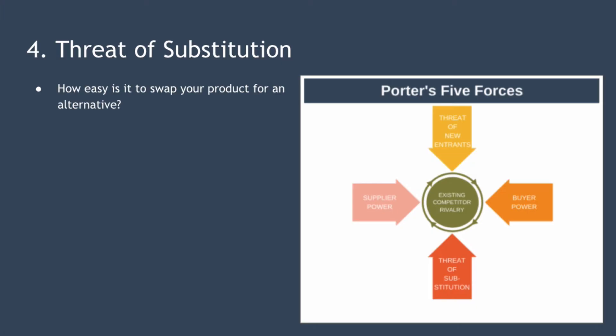The fourth force is the threat of substitution — how easy would it be to swap your product for an alternative? This threat isn't about replacing your product with an identical product, but about your customers finding another way to achieve what your product does. For example, customers might choose to replace your airline's flights with video conferencing software. The rise of working from home may limit the rents that commercial office owners can charge. The existence of substitute products will place a limit on the ceiling price you can charge, limiting profitability across the industry.